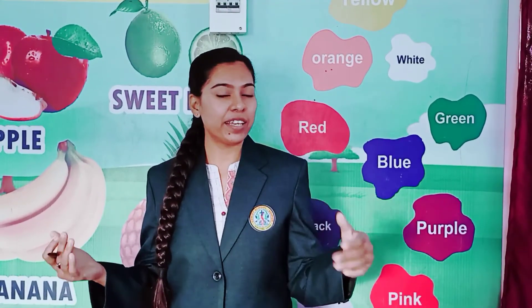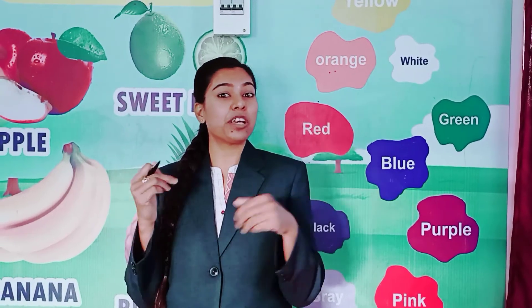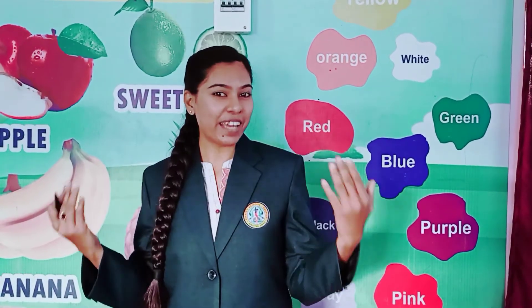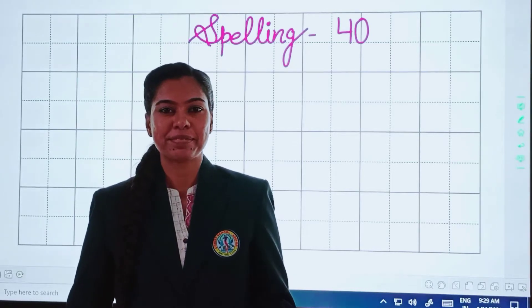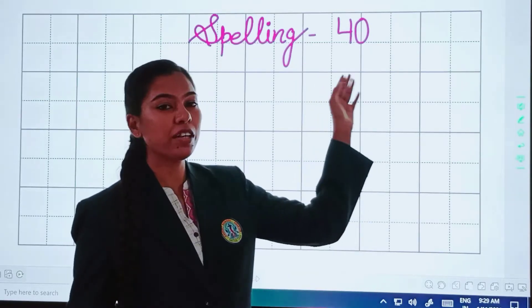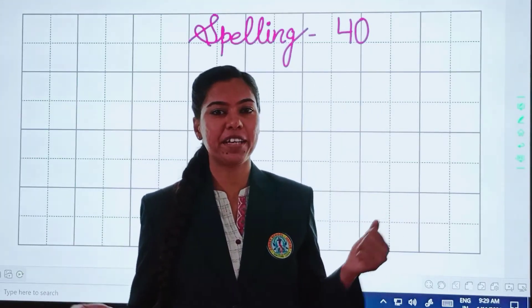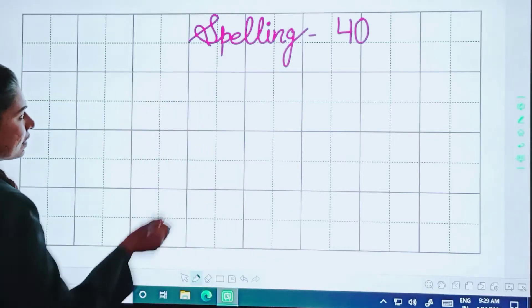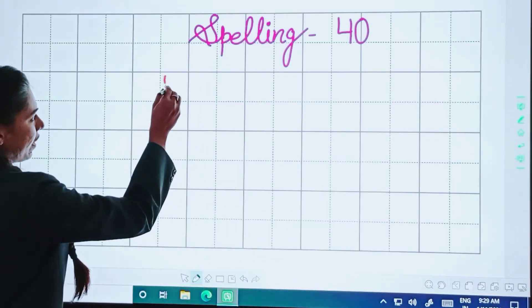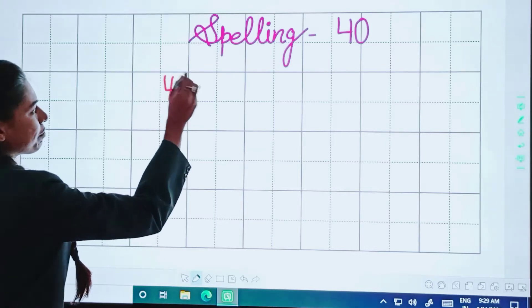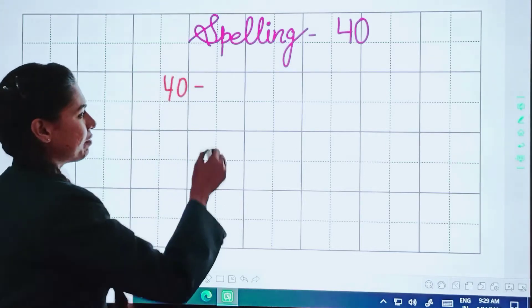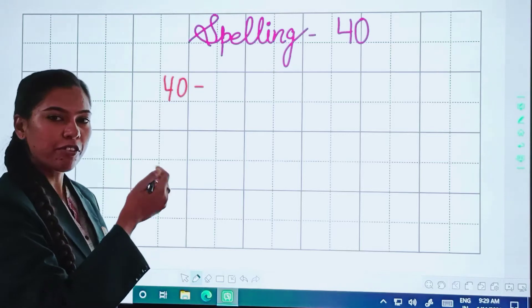In maths, we are learning spellings. Today we will be learning our next spelling — that is 4-0, 40. First we will write the number 4-0-40, then we will write the spelling of 40.